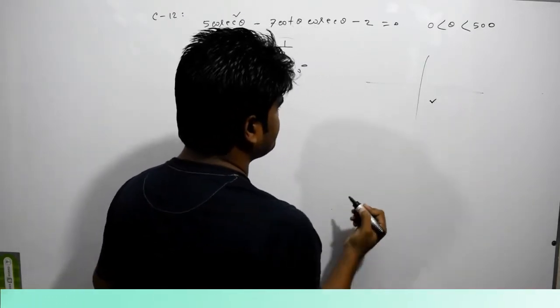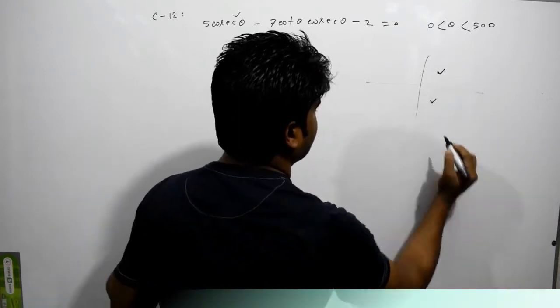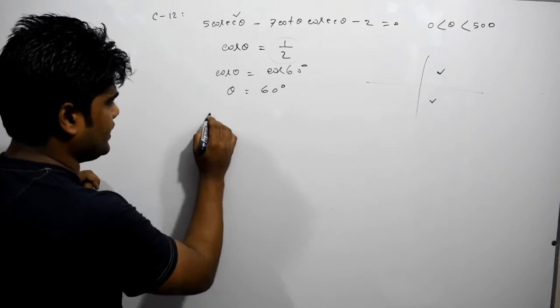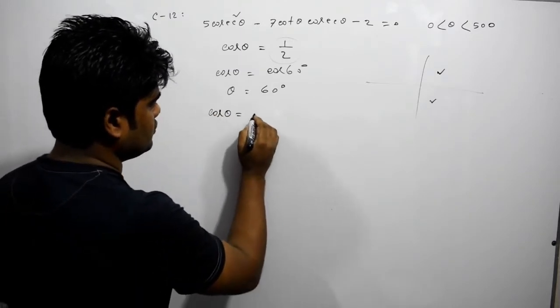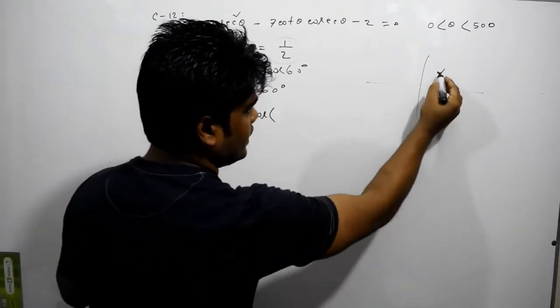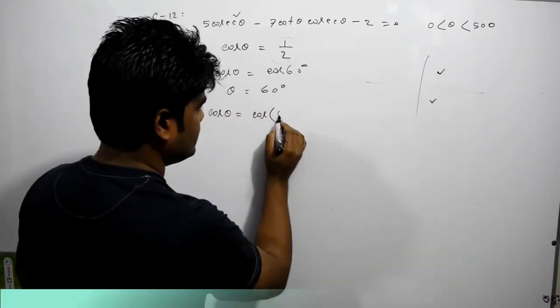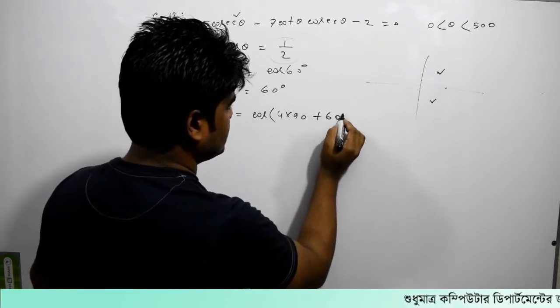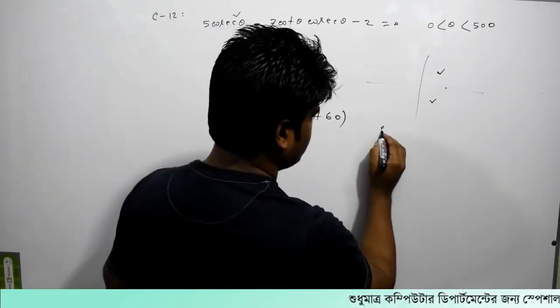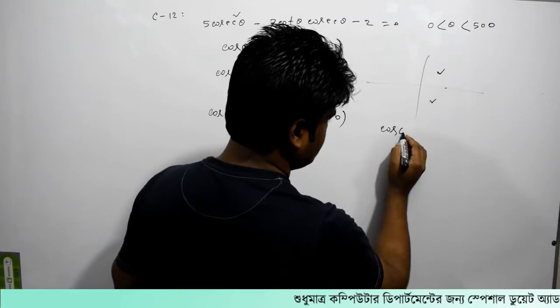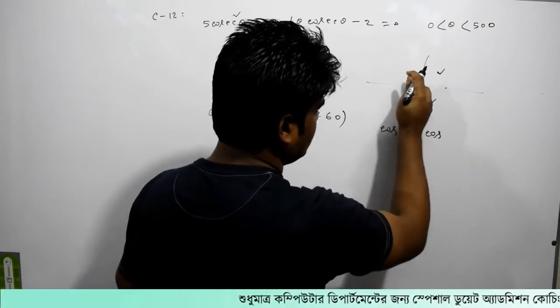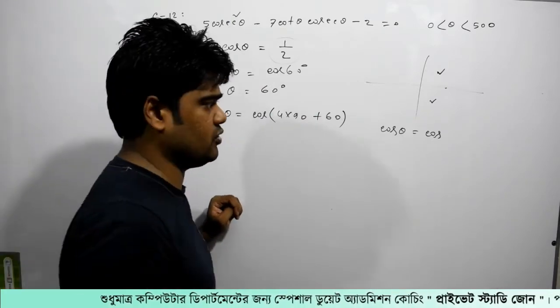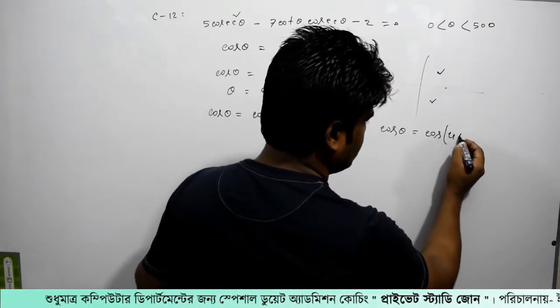This is cos positive. So let's make an equation. Cos theta is equal to cos. So this is 490. 490 is equal to 60. So this is cos theta is equal to cos. Cos 390 is equal to cos. So this is cos theta is equal to 490.